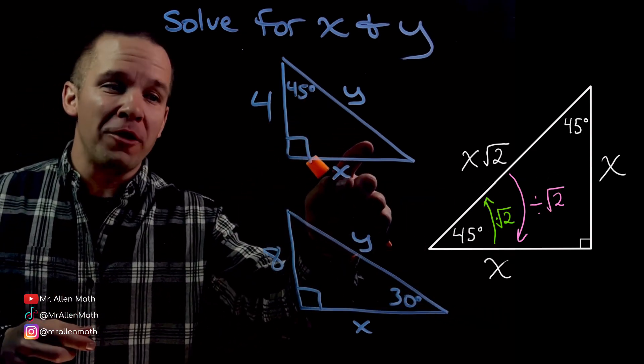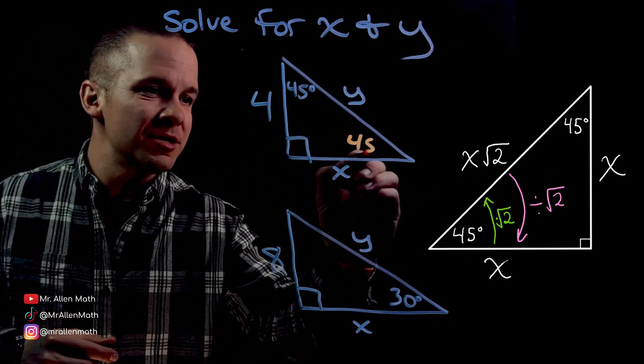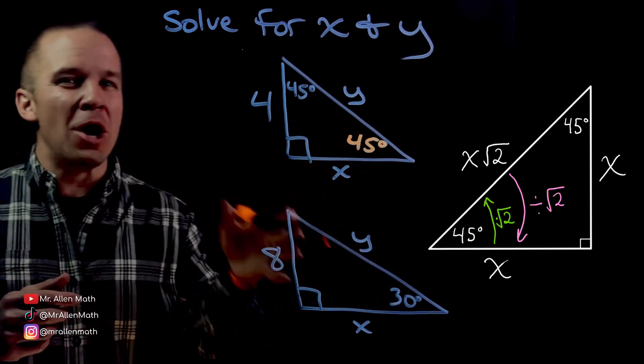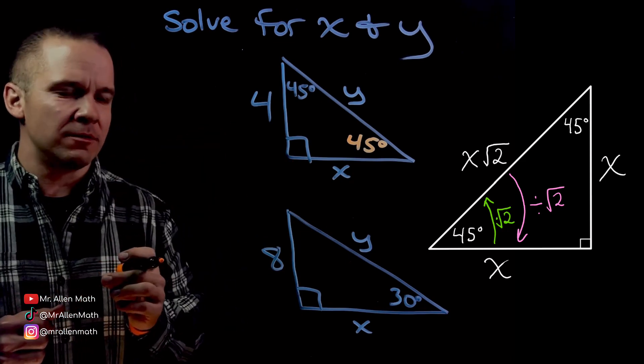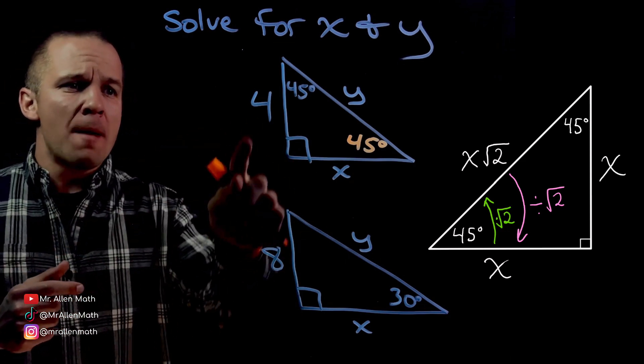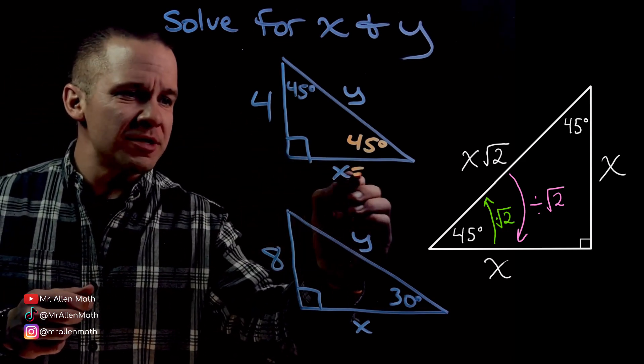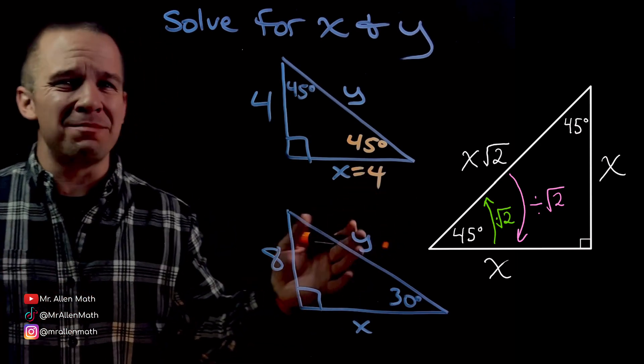We have a 45-45-90 triangle. There are 180 degrees in a triangle, so I can get that other angle. In a 45-45-90 triangle, my legs are congruent — they're the same measure. So easy money right there.